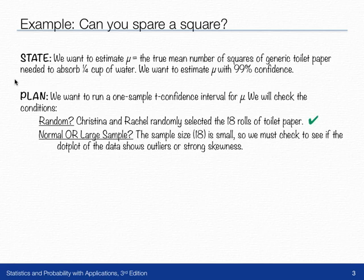The second condition is an either-or scenario. Is the distribution normal that we want to use, or is the sample large enough? The sample size of 18 is small, that is, it's smaller than 30, so we have to check the dot plot of the actual data that we have, and we need to see if it shows outliers or strong skewness. Any obvious signs of non-normal behavior.